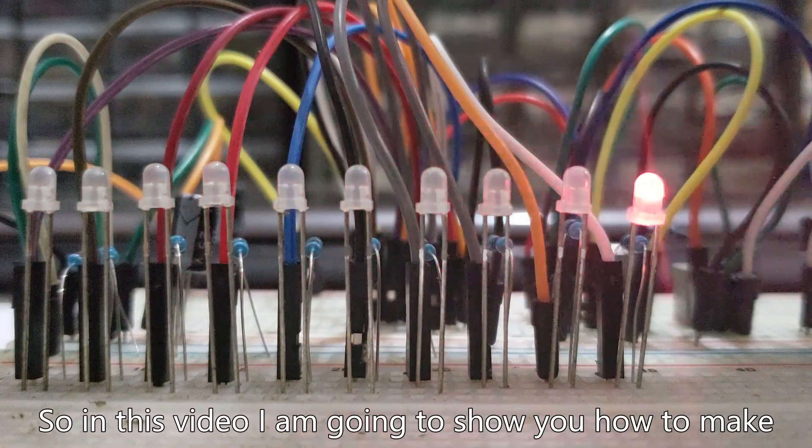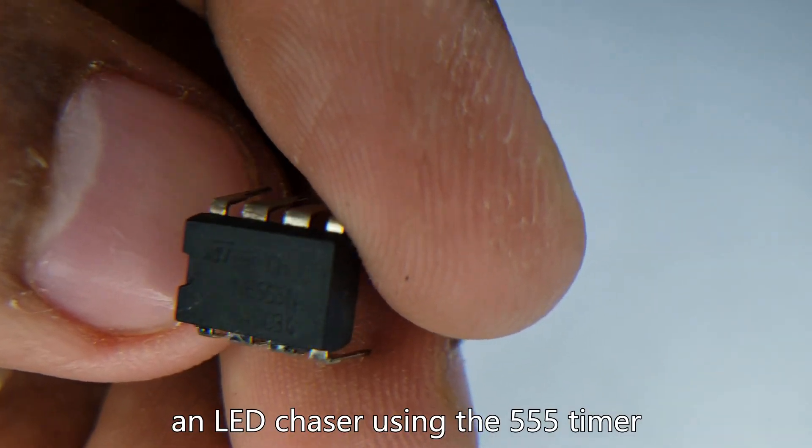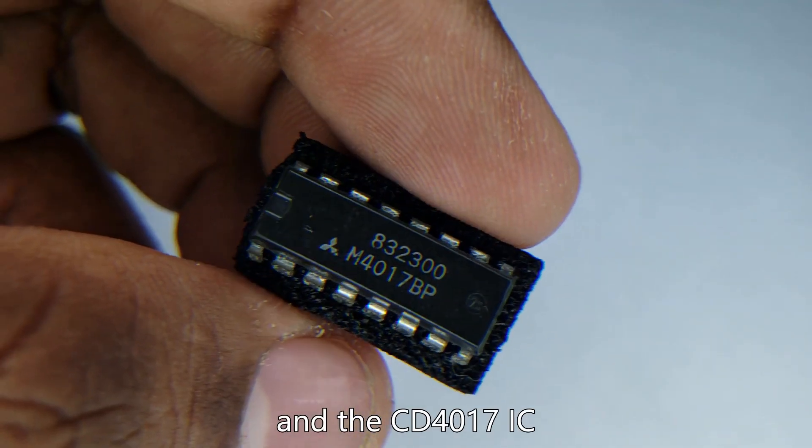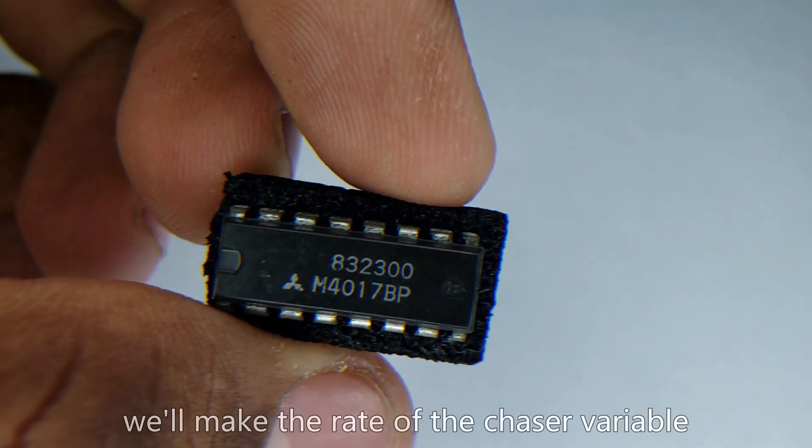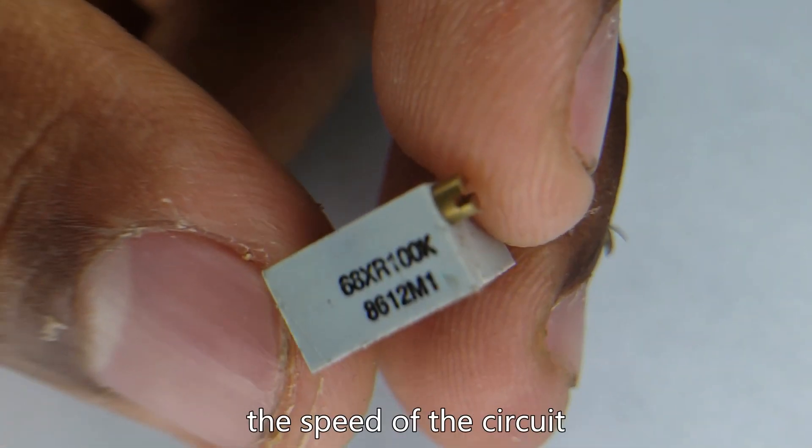In this video, I'm going to show you how to make an LED chaser using the 555 timer and the CD4017 IC. We'll make the rate of the chaser variable by using a potentiometer to control the speed of the circuit.